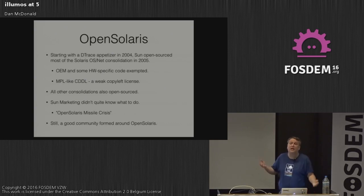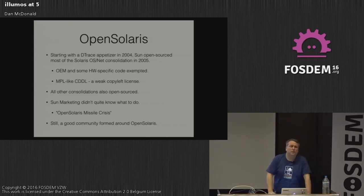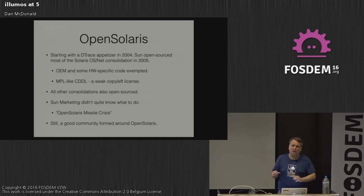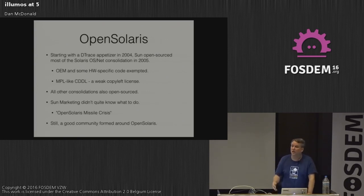All other consolidations were also open-sourced — most came from open source components to begin with, like X, OpenSSL, or Apache. This was great and we started building a small community. We wanted to get a distro out, but our marketing called it OpenSolaris, which upset people because everyone wanted to do their own OpenSolaris distro. Sun Marketing said that name was copyrighted, causing a big kerfuffle. Despite that, a decent community started forming around OpenSolaris.